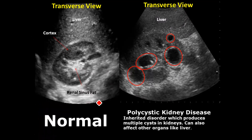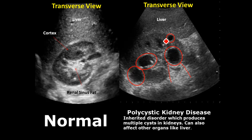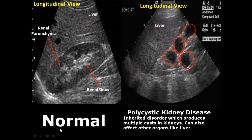In polycystic kidney disease, we have multiple cysts — round anechoic structures with posterior acoustic enhancement. There will be multiple of them. We can see one in the cortex in the transverse view; most of them are near the renal sinus or the medullary region. It is an inherited disorder. In the longitudinal view of the right kidney, there are multiple cysts again with posterior acoustic enhancement and anechoic round structures.